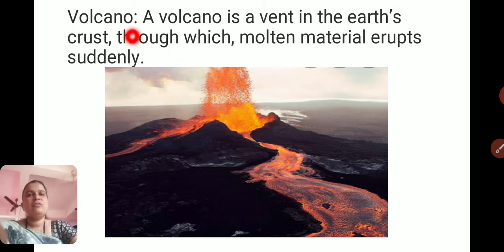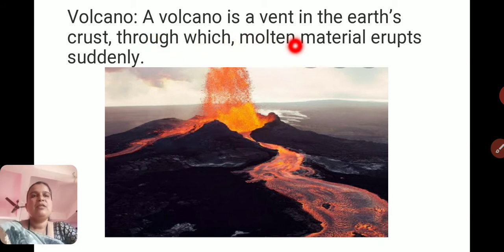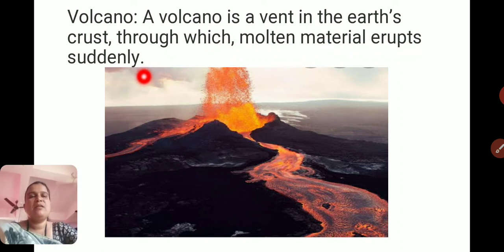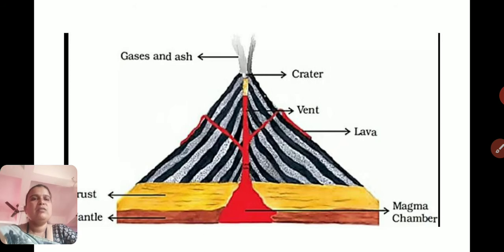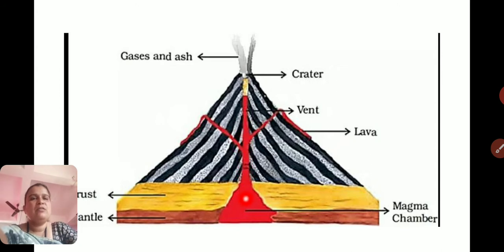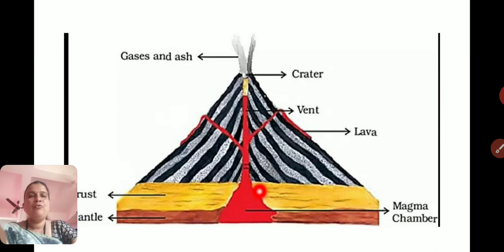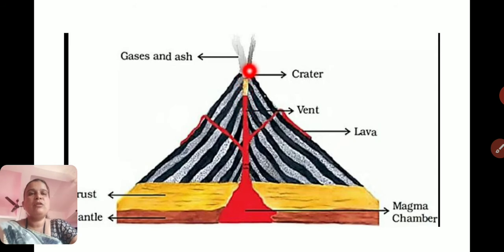Now, among endogenic forces, let's look at volcanoes. What is a volcano? A volcano is a vent in the Earth's crust through which molten material erupts suddenly. Here you can see this is the volcanic eruption, this is the vent, and through the vent, from the magma chamber which contains molten magma — hot rock fluid — it erupts on the Earth's surface through the crater. The place where the molten magma erupts is called the crater.